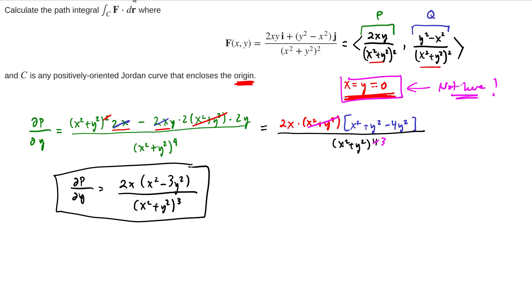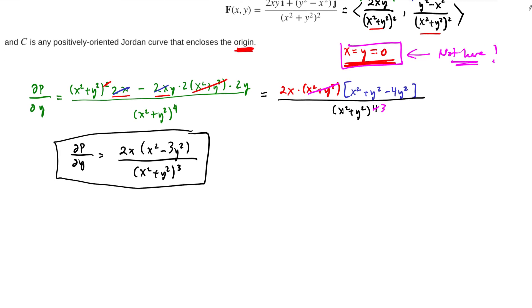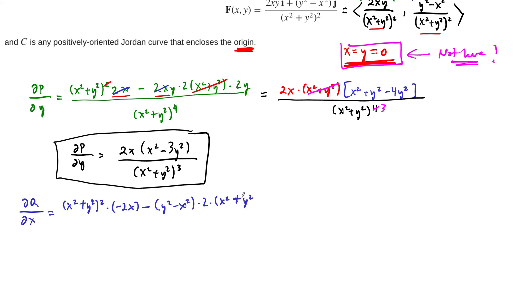We also have to compute ∂Q/∂x. We're checking whether this vector field is conservative. Again, it's a quotient rule but with respect to x: (x² + y²)² times the derivative of the numerator with respect to x, which is −2x, minus the numerator y² − x² times the derivative of the denominator with respect to x. All over (x² + y²)⁴.